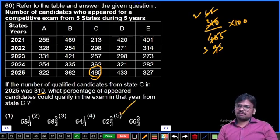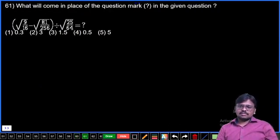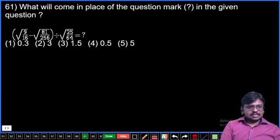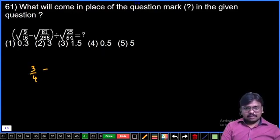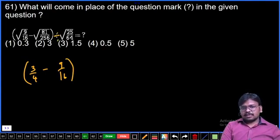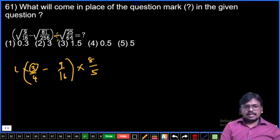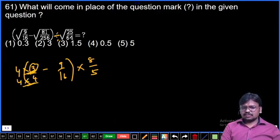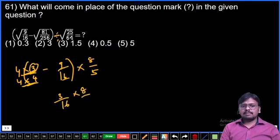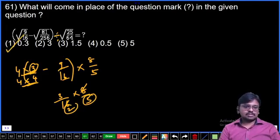Question 61: Square root of 9 by 16 minus square root of 81 by 256, divided by square root of 25 by 64. Simplify: 3 by 4 minus 9 by 16, divided by 5 by 8. This equals 12 minus 9 over 16, which is 3 by 16. Then multiply by 8 by 5: equals 3 by 10, which is 0.3. First option.